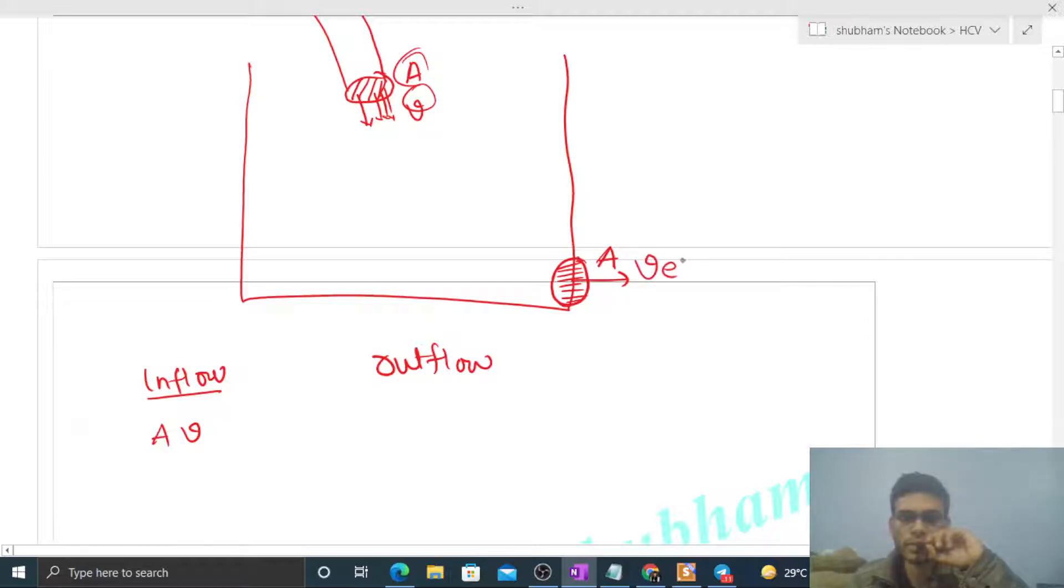ve is the velocity of efflux, and we derived this - it comes out to be square root of 2 times g times h. What is h? h is the height of water level in this tank, means above this hole. What is the height of this water level? That is your h.